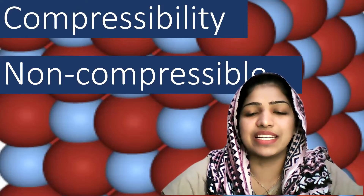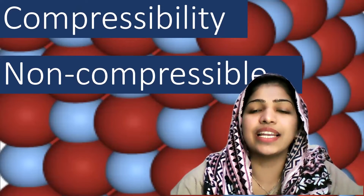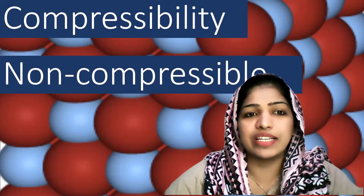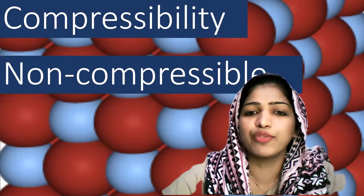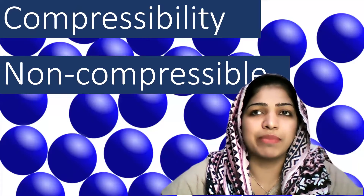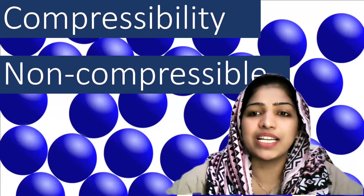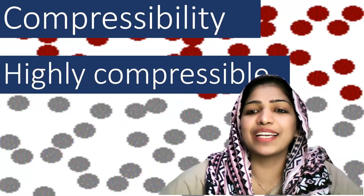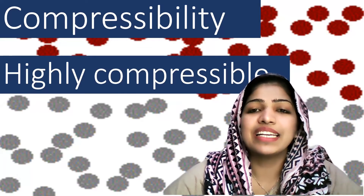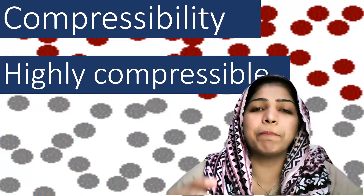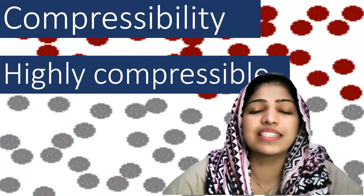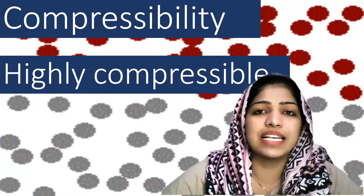The next property is compressibility. Compressibility means applying pressure or force to compress a substance. Solids are not compressible. Gas is highly compressible. Examples include Compressed Natural Gas, which we call CNG, and Liquefied Petroleum Gas, or LPG. This is why gas can be compressed easily by applying pressure.